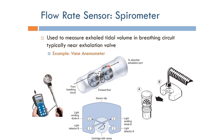One of them is the vane anemometer. It looks like this — it has a piece that connects to the expired gas direction. It has vanes like this, and basically it resembles the device used to measure wind speed.